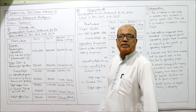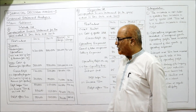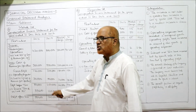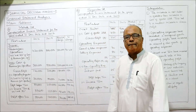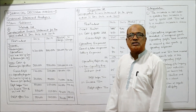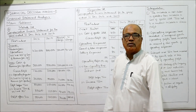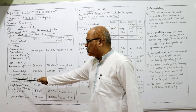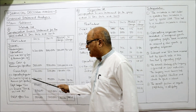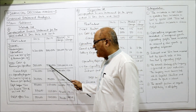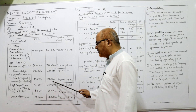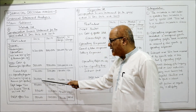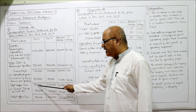From gross profit we deduct operating expenses. In the problem, operating expenses are given as 12% and 10% of cost of revenue from operations. So 12% of 3 lakh = 36,000 for last year; 10% of 5 lakh = 50,000 for current year. Deducting operating expenses: 1,20,000 minus 36,000 = 84,000 profit before tax for last year.